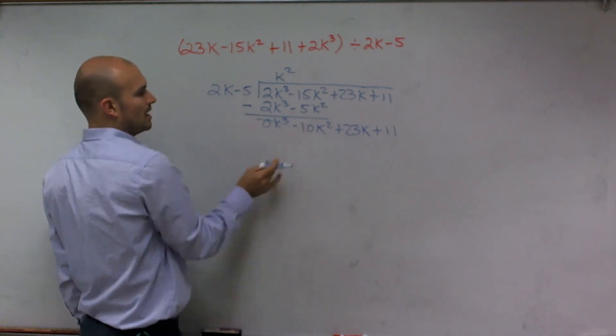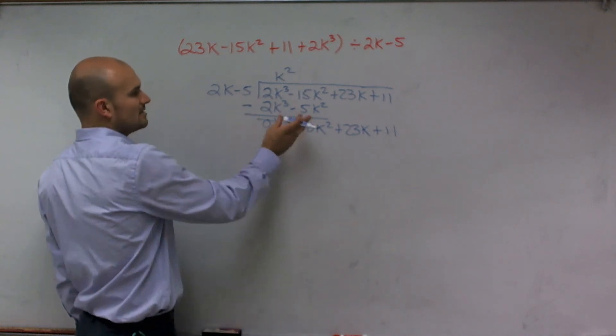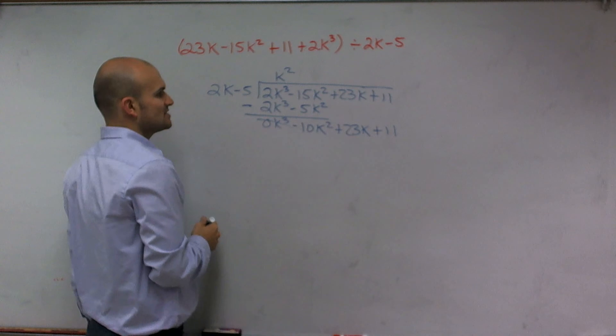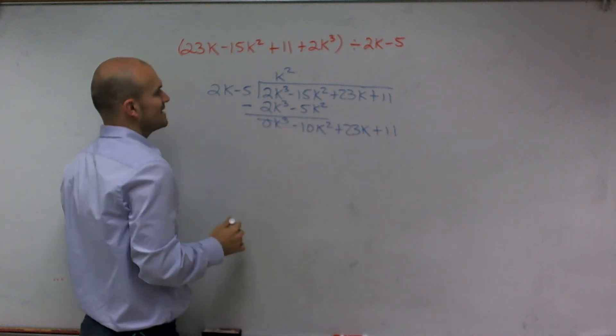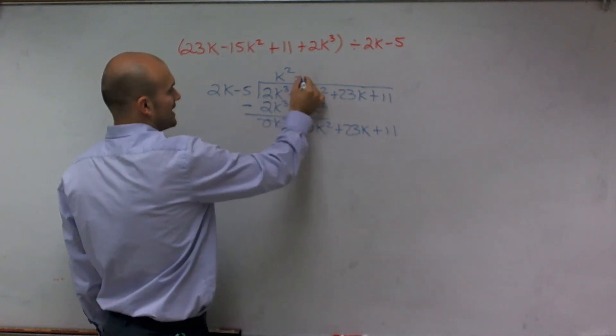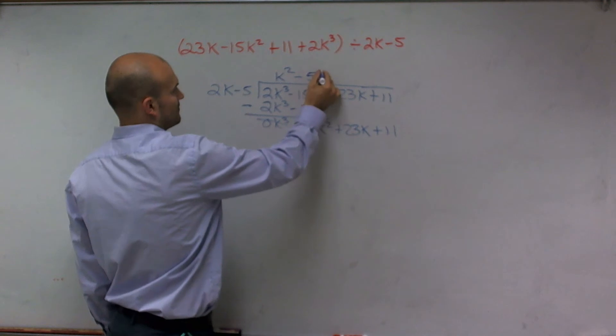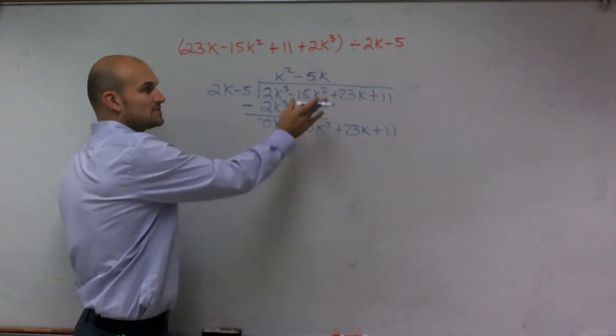Now, we work on the next value. So I have 2k divides into a negative 10k squared. Well, 2k divides into negative 10k squared in negative 5k. And then, once we get this value, we multiply again.